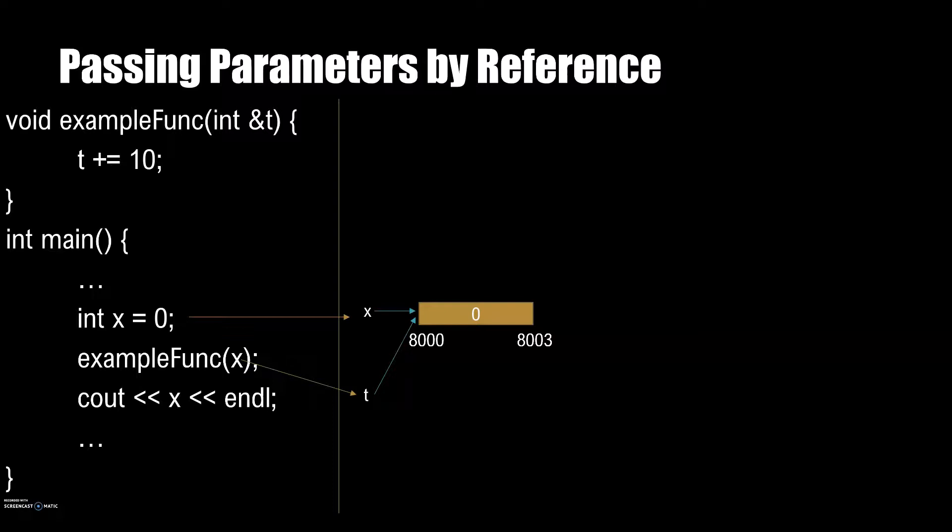So let's walk through this. First in main, we instantiate int x to 0. And again we are just arbitrarily saying x refers to the integer at memory address 8000 for the sake of the example. Then we call exampleFunc and pass x to it. In this case, the variable named t in the function will actually also refer to location 8000 that x refers to. Therefore, when we add 10 to t, it adds 10 to the value at address 8000. When the function terminates, the value of x is printed and we will see that x is now 10.